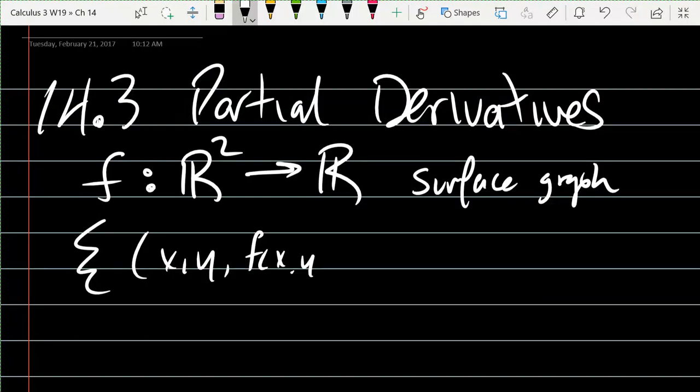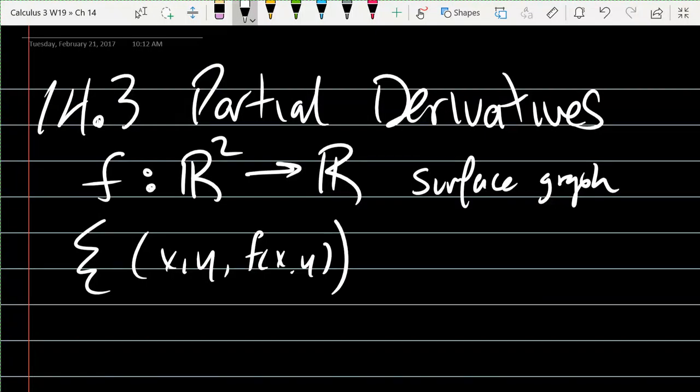So our x, y coordinates will be in the domain, and the z coordinate is a function value at that x, y coordinate. So we just have to write x, y is in domain of f.